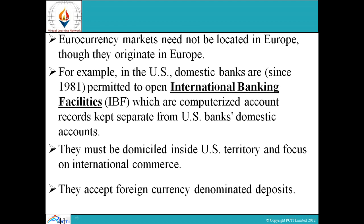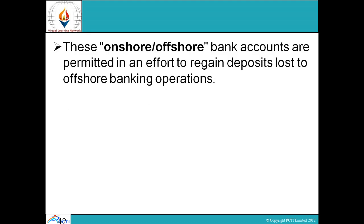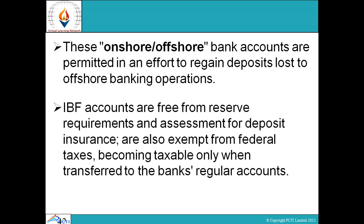Euro currency markets need not be located in Europe, though they originate there. In the US, banks have since 1981 been permitted to open International Banking Facilities (IBFs) — computerized account records kept separate from US domestic accounts. They must be domiciled inside US territory and focus on international commerce, accepting foreign currency denominated deposits. These offshore and onshore bank accounts are permitted in an effort to regain deposits lost to offshore banking. IBF accounts are free from reserve requirements, exempt from deposit insurance assessments, and also exempt from federal taxes, becoming taxable only when transferred to the bank's regular accounts.